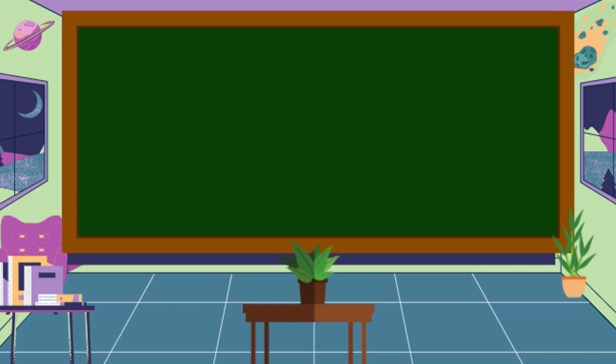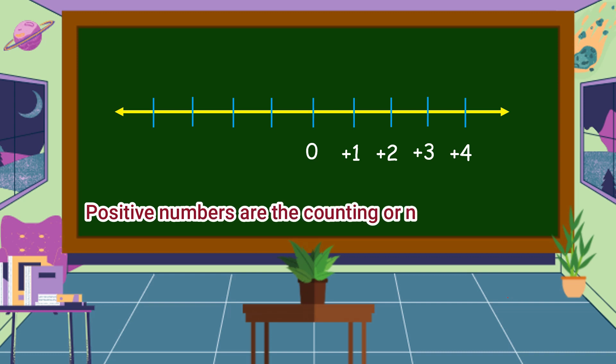One way to represent integers is through a number line. Observe the number line. We start zero at the center. To the right of zero, we have positive 1, positive 2, positive 3, positive 4, and so on. Or we can read this as 1, 2, 3, and 4. It is because positive numbers are the counting or natural numbers.